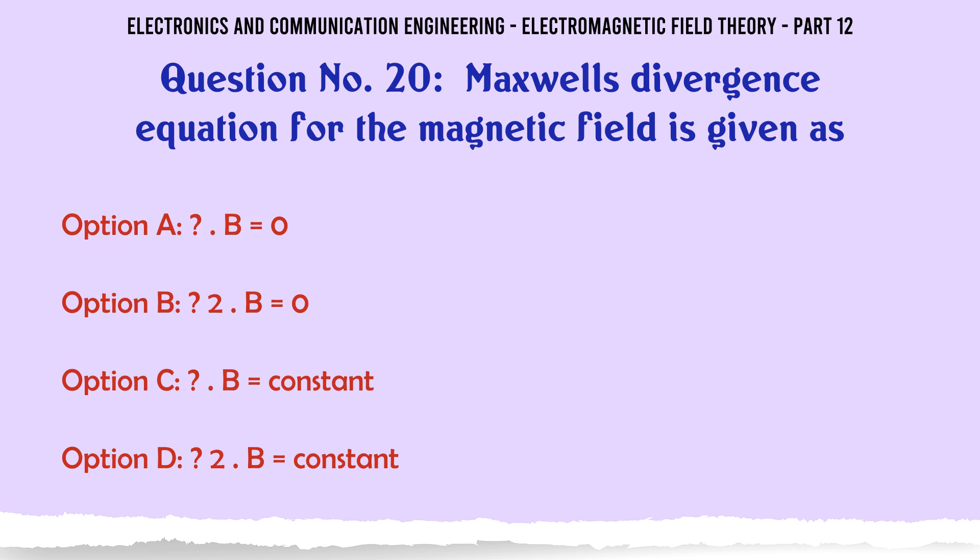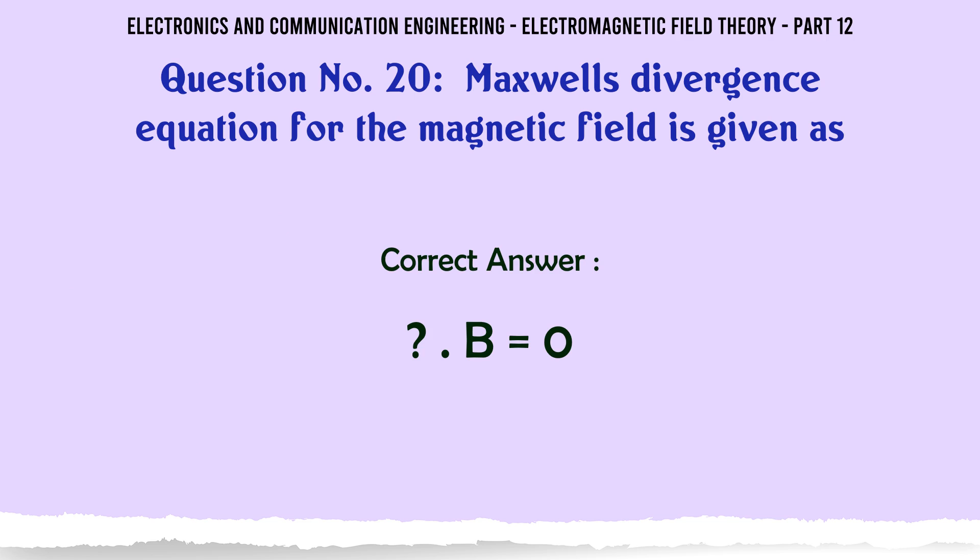Maxwell's divergence equation for the magnetic field is given as: A. ∇·B = 0, B. ∇²B = 0, C. B = constant, D. B = constant. The correct answer is ∇·B = 0.